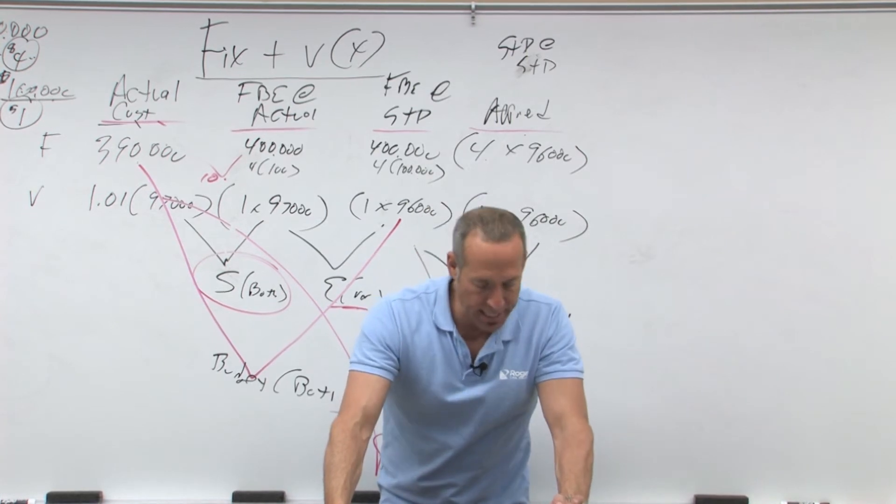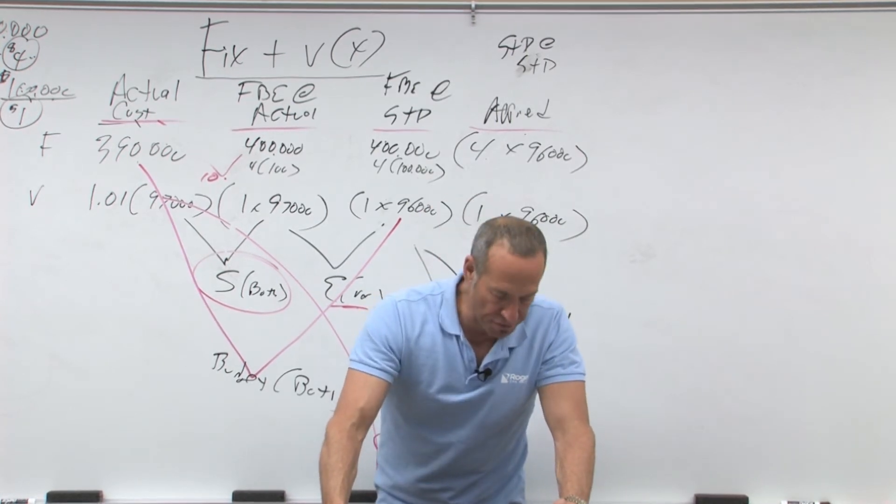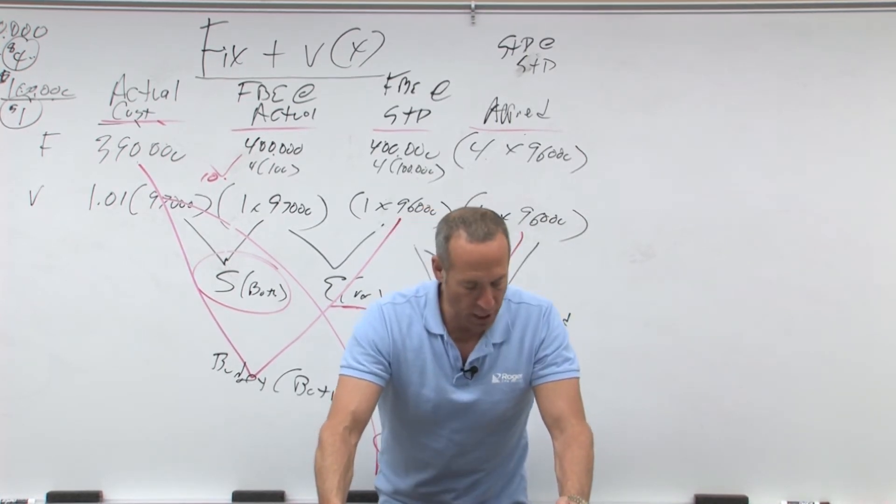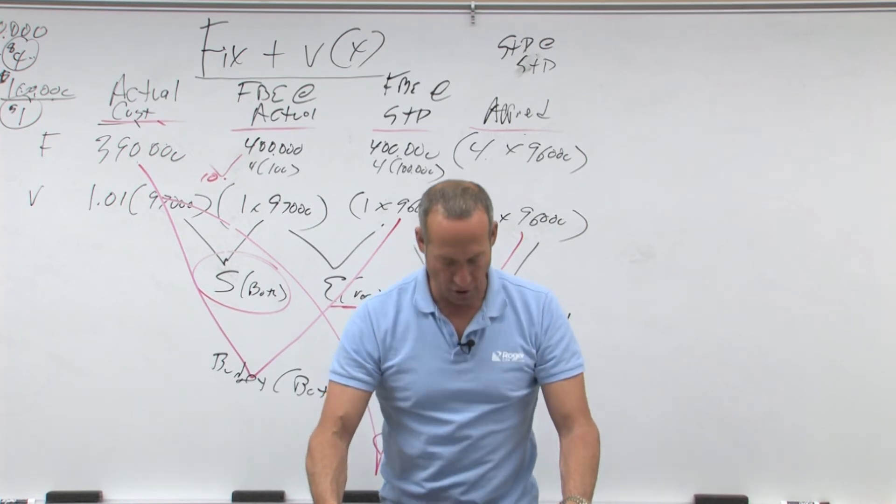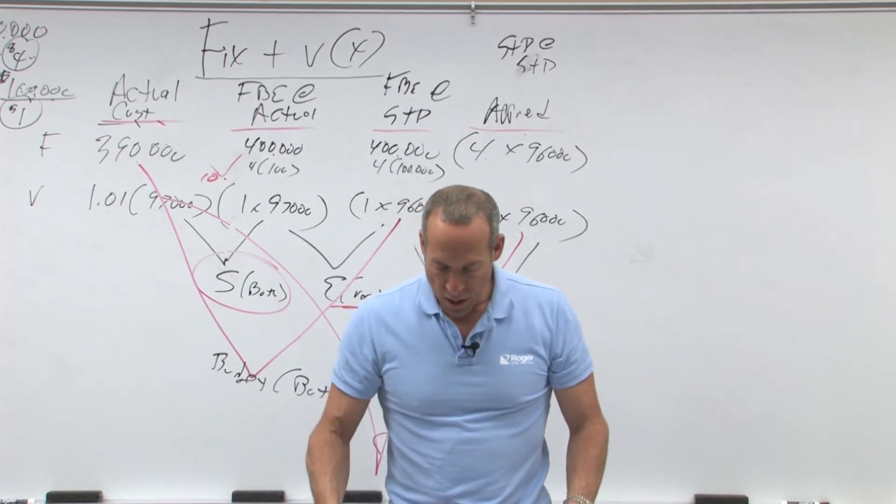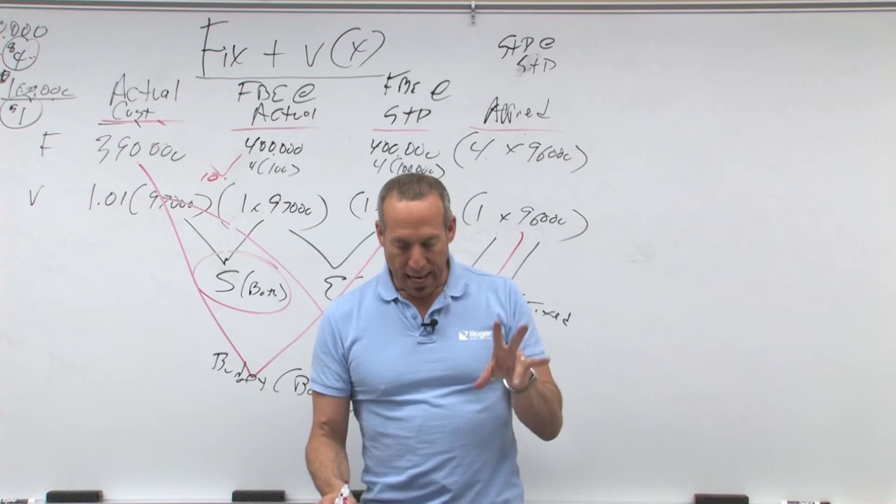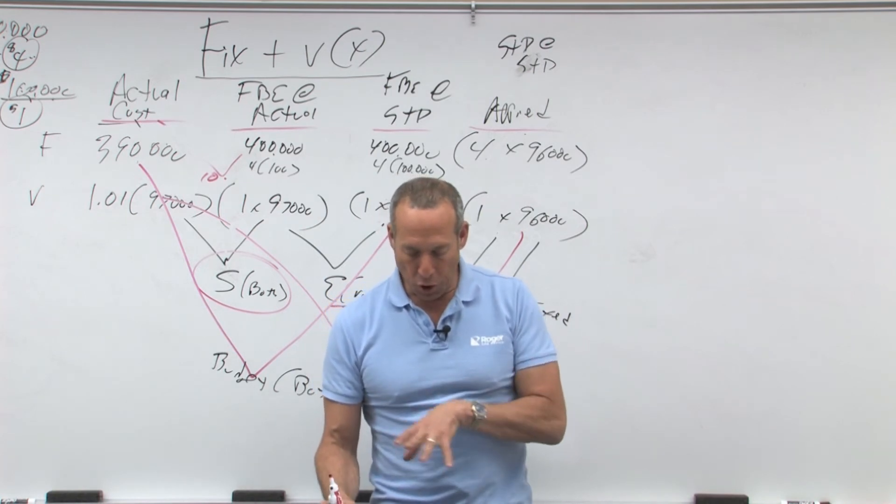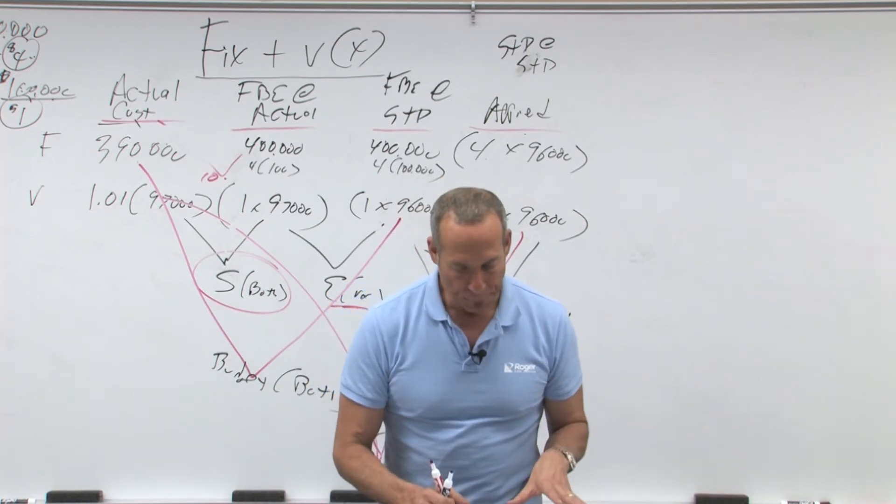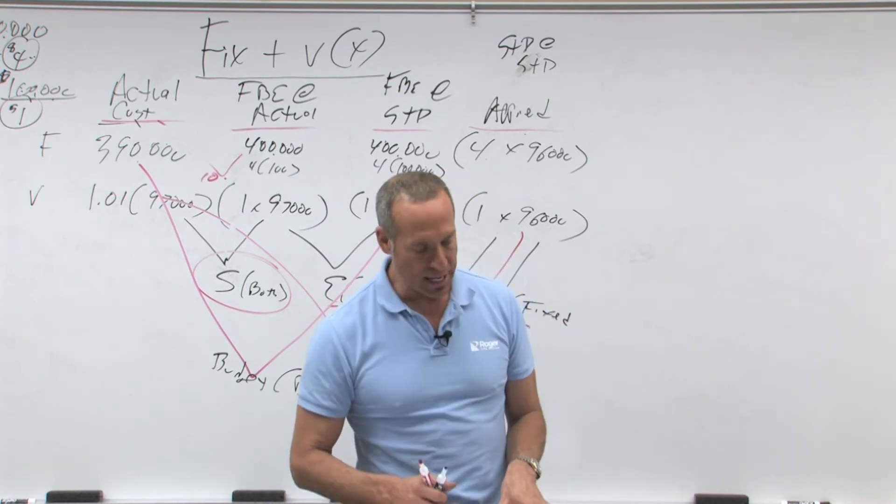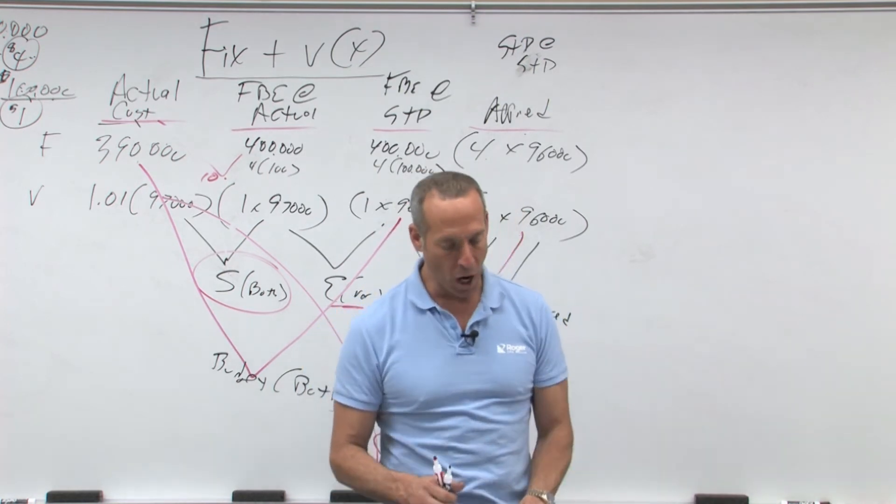The overhead spending variance is, and you can look at that, the overhead efficiency variance is, and the overhead production volume variance is, and that's the calculation for it. So as you look through it, that's where the differences are coming from. That's what's important to understand as far as how they're calculated.